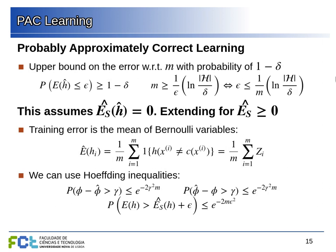We can also write this as a function of the error. To lower the error, we need to increase M or decrease the size of the hypothesis class. But we must guarantee that inside our hypothesis class there is at least one hypothesis with a true error below epsilon — that was our initial assumption. This assumes the empirical error on the best hypothesis is zero, but we can extend this using Hoeffding's inequality to allow a non-zero empirical error.